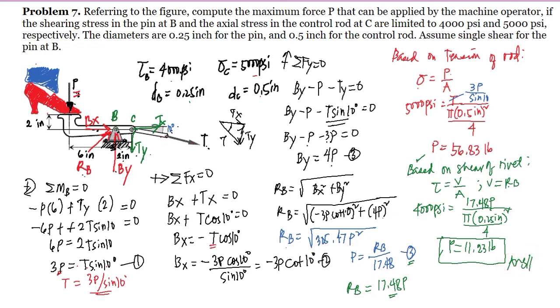Choosing the smaller value between the two, the maximum force P = 11.23 pounds. This means the design is governed by the shear on the pin at B, not by the tension of the control rod.